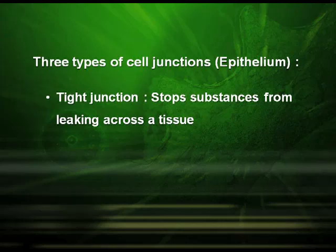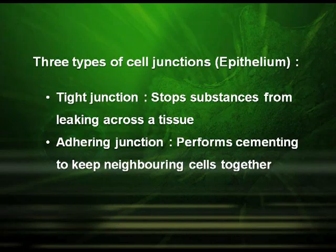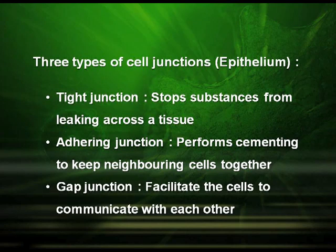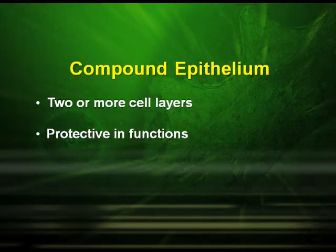These tissues have three types of cell junctions. The tight junction stops substances from leaking across a tissue. The adhering junction performs cementing to keep neighboring cells together. The gap junction facilitates the cells to communicate with each other. Compound epithelium tissue is made up of two or more cell layers and is protective in function.